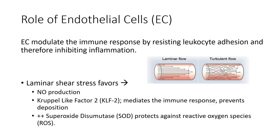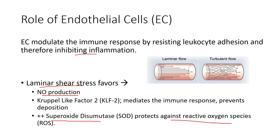Healthy endothelial cells resist leukocyte adhesion, inhibit inflammation, and release nitric oxide — important for maintaining vascular health. Laminar shear stress favors nitric oxide production and superoxide dismutase, which helps protect against reactive oxygen species. With turbulent flow, we lose this mechanotransductive stimulation of the endothelium and see less of these protective factors, including factors that mediate immune response and adhesion processes.